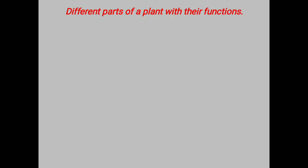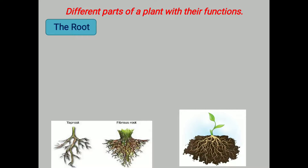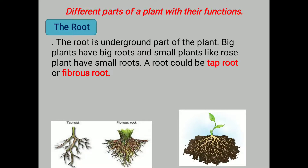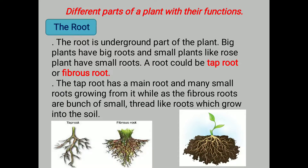We will start from the underground part — the root. The root is the underground part of the plant. Big plants have big roots, and small plants like the rose plant, which you must have seen in your garden, have small roots. A root can be a tap root or a fibrous root. The tap root has a main root with many small roots growing from it, while fibrous roots are a bunch of small thread-like roots which grow into the soil.